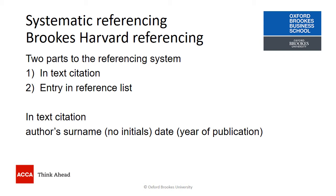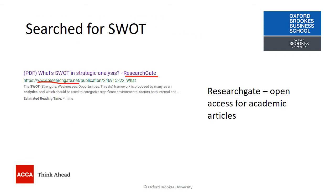The in-text citation for Brookes Harvard referencing is the author's surname — we don't include initials — and the date, the year of publication of the article. In this example, I have searched in Google for some information about SWOT, a business model method of analysis. I've discovered an entry called 'What's SWOT in Strategic Analysis' from ResearchGate. ResearchGate is an open access resource for academic articles, meaning the PDFs are available without any charge and there's no need to be logged into a university library system to access them.